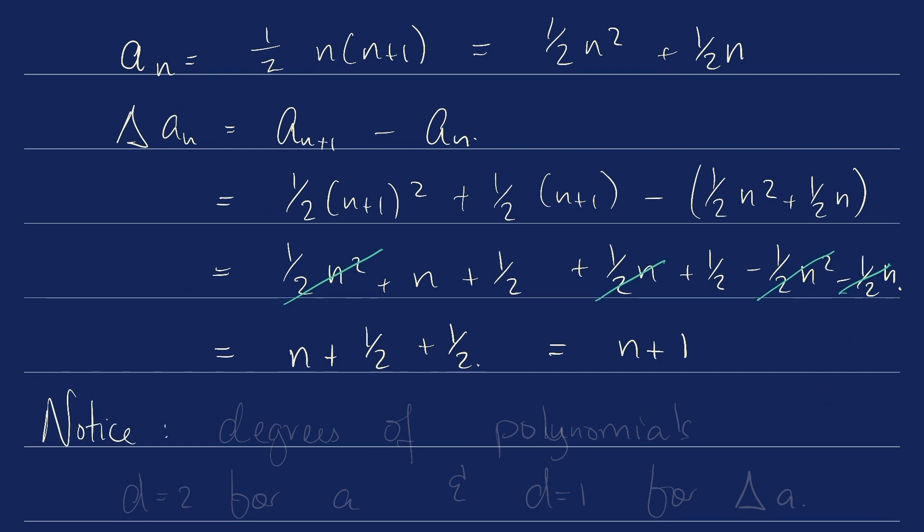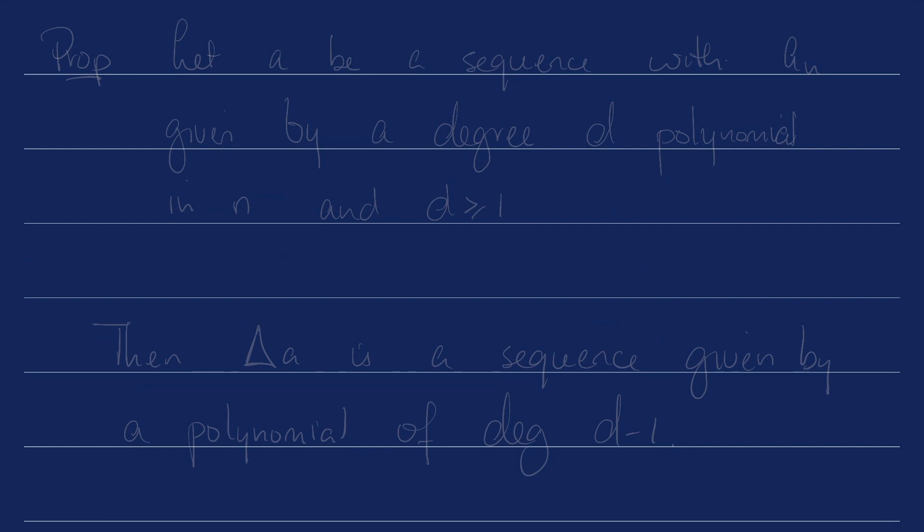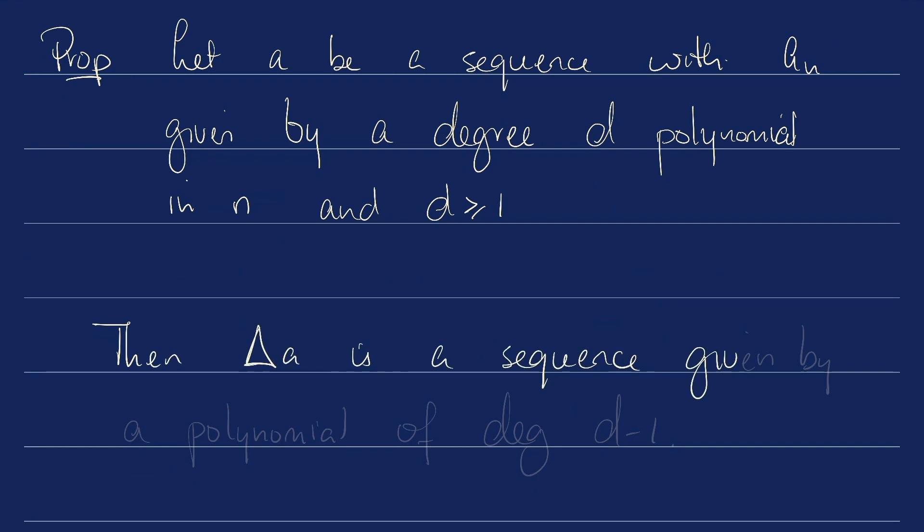Notice the degrees of the respective polynomials. The degree of the polynomial that describes the sequence a has degree two, while the degree of the polynomial that describes delta of a has degree one. The degree decreases each time. I'm going to lay out some results that paint the narrative. We will not be proving this or really going into details, but you can read the details in your text. Result number one: Let a be a sequence with a_n, the nth term in that sequence, given by a degree d polynomial in n. d in this case should be greater than or equal to one. Then the difference sequence, delta a, it will be a sequence given by a polynomial of one less degree.